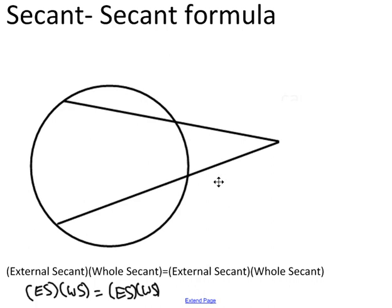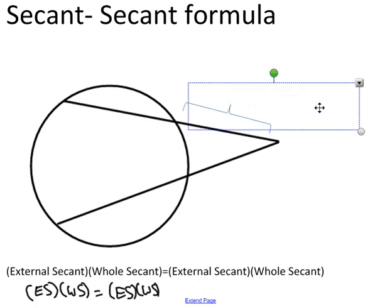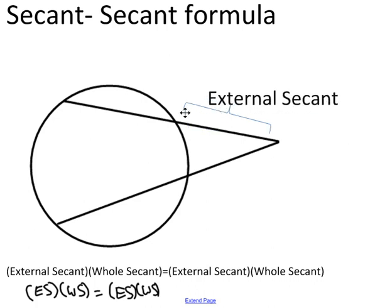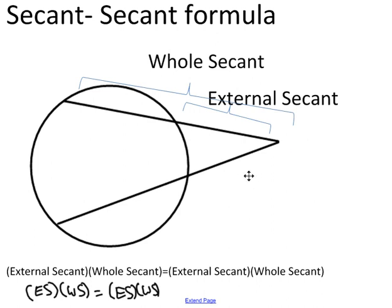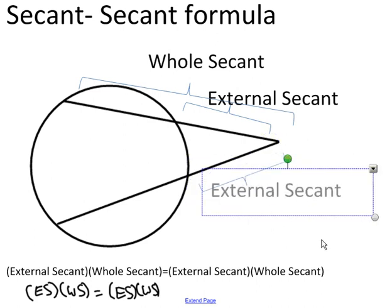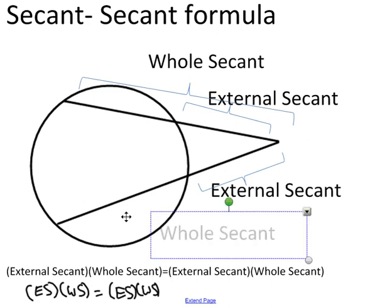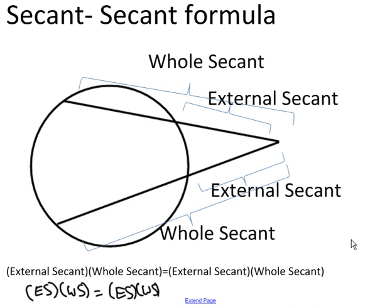The external secant refers to the part of the secant that's outside of the circle. The whole secant refers to the sum of the part that's inside the circle and the part outside the circle. Same thing with the other secant — the external secant is the outer part, and the whole secant is the inside part plus the external secant. So that's the formula when you have two secants.